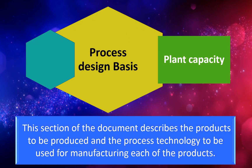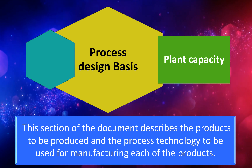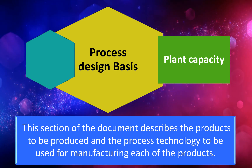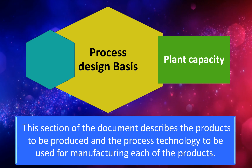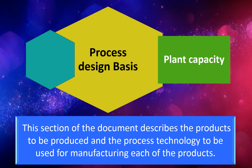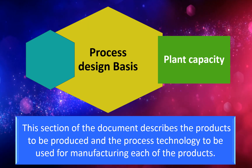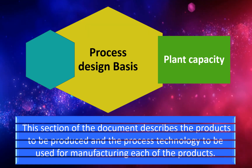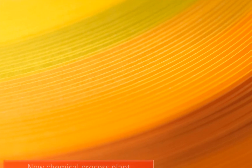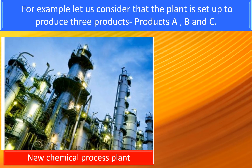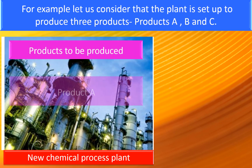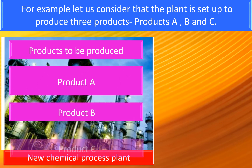Plant Capacity. This section of the document describes the products to be produced and the technology to be used for manufacturing each of the products. For example, let us consider that the plant is set up to produce three products: Product A, B, and C.